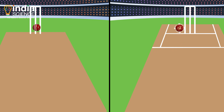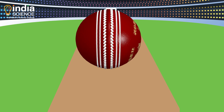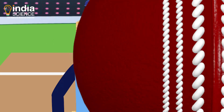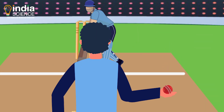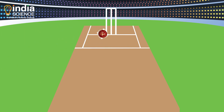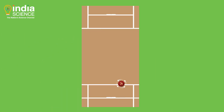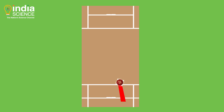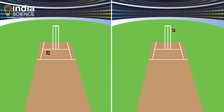Broadly, there are two types of bowling in cricket: swing bowling and spin bowling. Spin bowling, as the name suggests, is a technique in which a bowler rotates or spins the ball on its axis while bowling so that it deviates from its original path. But why does the ball change its direction? The ball can either change its direction through the air or after bouncing off the pitch, and the reasons for both deviations are different.